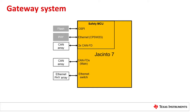On the Jacinto 7 platform, the one-port Ethernet from the safety MCU island and the integrated Ethernet switch from the main domain can be used for this purpose. The integrated Ethernet switch on the Jacinto 7 platform includes several hardware offload features for inter-VLAN routing, packet filtering, and rate limiting that can be effectively leveraged.